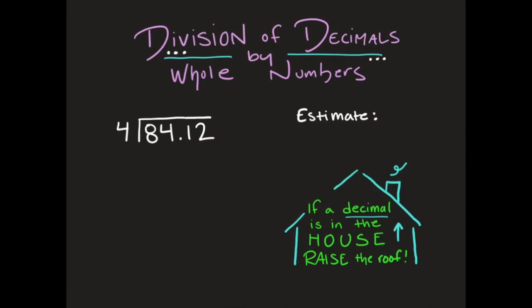Today we're going to do division of decimals by whole numbers. Before we begin, we're going to make an estimate. I have 84 and 12 hundredths divided by 4 — remember you read that from right to left. I want numbers that work well together, so I see 84 and 4. I'll use 80 divided by 4 as my estimate, and 80 divided by 4 equals 20.